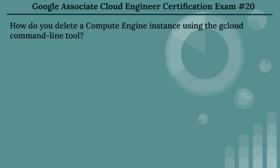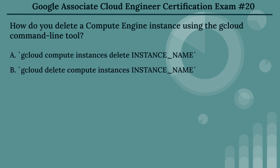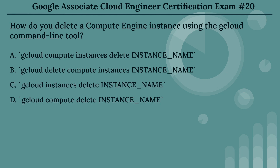The twentieth question: how do you delete a Compute Engine instance using the Cloud command line tool? The options are: Option A, gcloud compute instances delete INSTANCE_NAME. Option B, gcloud delete compute instances INSTANCE_NAME. Option C, gcloud instances delete INSTANCE_NAME. Option D, gcloud compute delete INSTANCE_NAME.